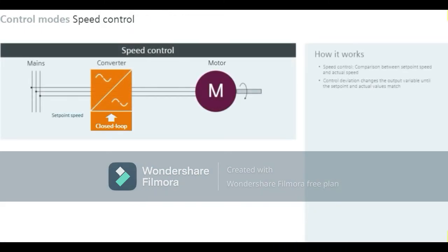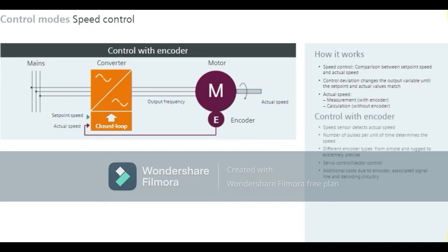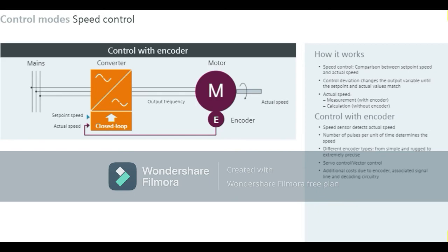During speed control, the set point speed is compared to the actual speed. The control deviation changes the output frequency until the set point and actual values match. The actual speed can be recorded using a speed sensor; the number of pulses per unit of time represents the speed. Different encoder types are available, from simple and rugged to extremely precise. Depending on the internal control structure, this is referred to as either servo control or vector control. However, the encoder, associated signal line, and decoding circuitry all increase costs.